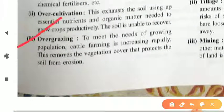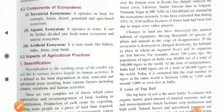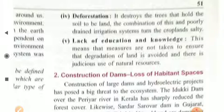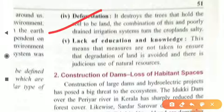The next cause is over grazing. To meet the need of a growing population, cattle farming is increasing rapidly, which removes the vegetation cover that protects the soil from erosion. We put cattle into the grassland and they over graze, so the fertile soil is not held by plants and trees, leading to soil erosion. Next is deforestation, which destroys the trees that hold the soil to the land, and combined with a poorly drained irrigation system, can turn cropland saline.